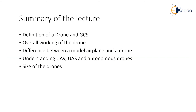To summarize the overall lecture, we understood the definition of a drone, the requirements of a drone's ground station, the overall working of a drone along with a brief overview of its various components, the difference between a model aeroplane and a drone, the difference between UAV, UAS, and autonomous drones, and finally the sizes of drones. In the next lecture, we will be looking at various types and subtypes of drones. Thank you very much.